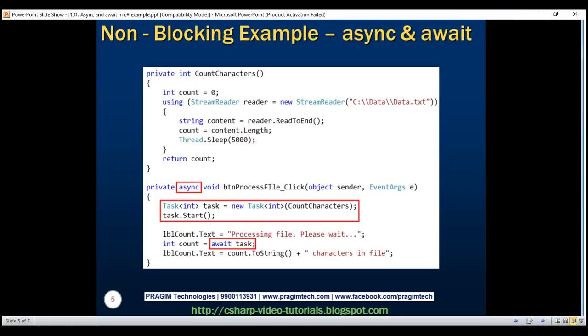So what is the use of async and await keywords in C#? Async and await are used to create asynchronous methods. The async keyword specifies that a method is asynchronous, and the await keyword specifies a suspension point. The await operator signals that the async method can't continue past that point until the awaited process is complete; in the meantime, control returns to the caller. An async method typically contains one or more await operators, but the absence of await doesn't cause a compiler error.